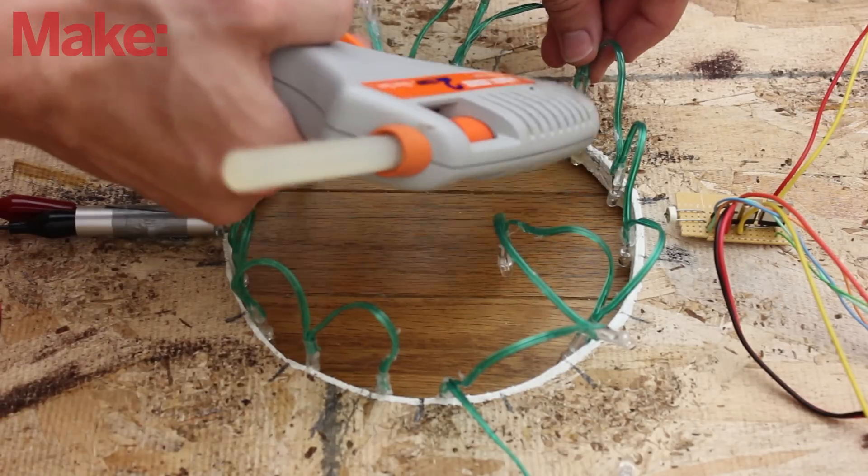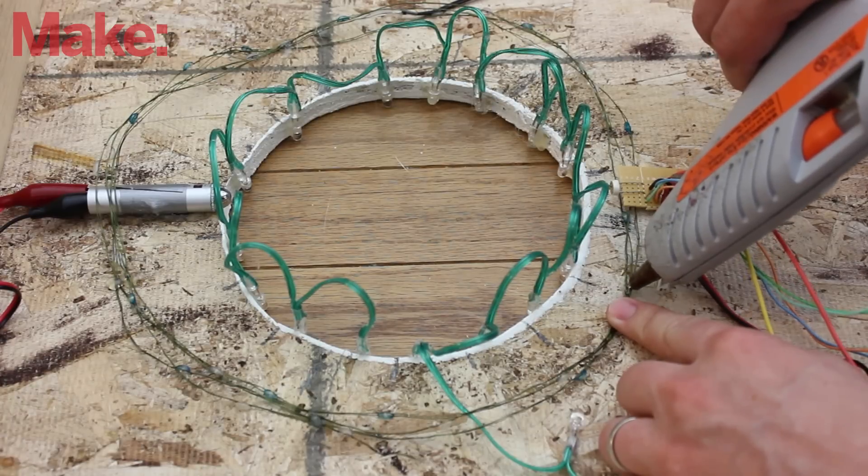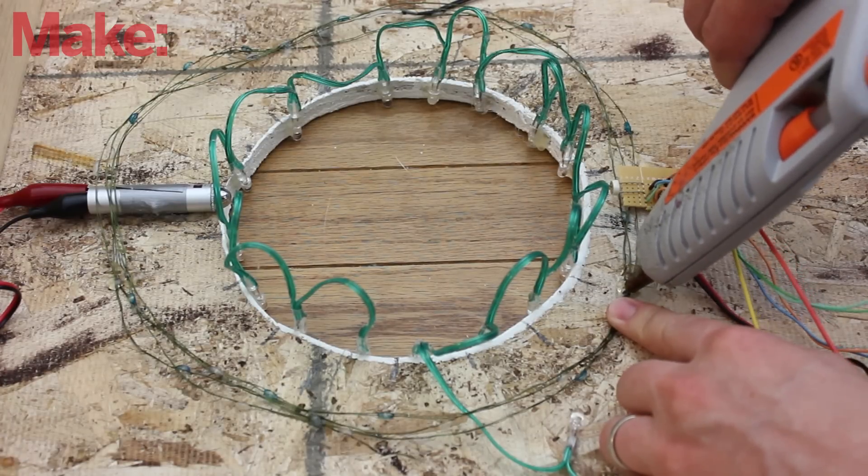To attach the lights, I hot glued one set of LEDs to the inside of the hole. Then I took a second set of LEDs and mounted those in a circle around the first set.